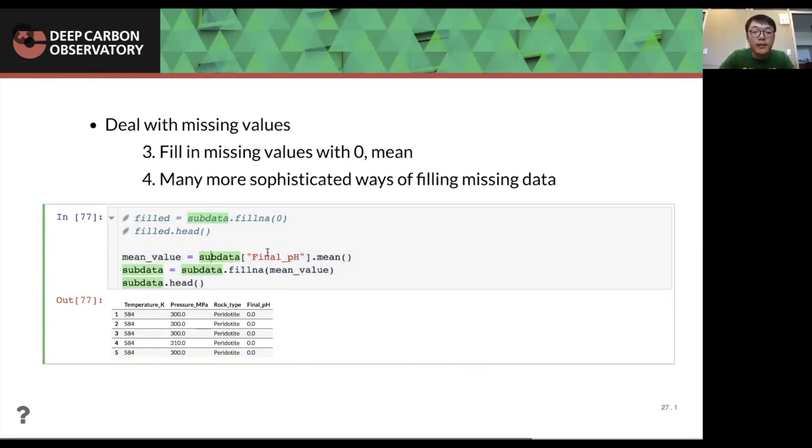And it's important that we cannot do that for our pH. Then another way of doing that, we can use a mean. So basically we calculate the mean value of the final pH column based on the existing values, save it into mean value. And then we fill in, fill NA with the mean value and the save the data back into sub data. Then if we do that, we will see that the missing final pH values are filling with the mean value, which is 7.6. And more sophisticated way of doing this is out of scope of this webinar. We can, if you are interested, we can discuss this offline.